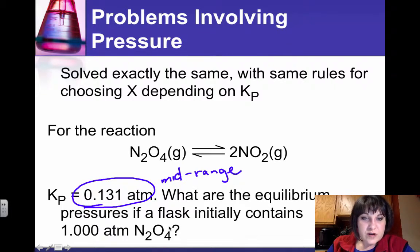And so to find the equilibrium pressures of a flask that contains one atmosphere of N2O4, what do we do? Well, we're going to use the solver because we have a mid-range Kp. Let's see how that works.